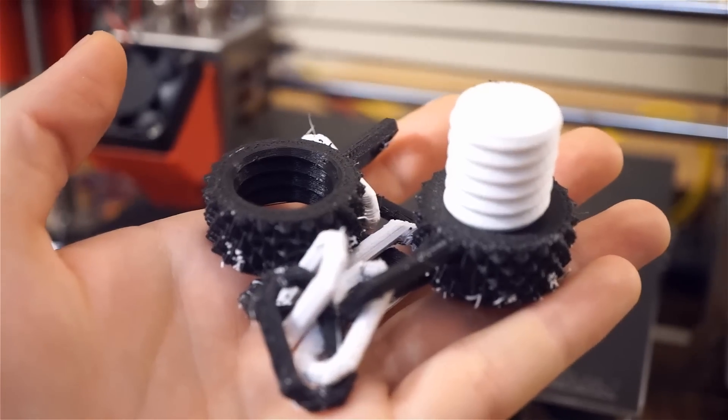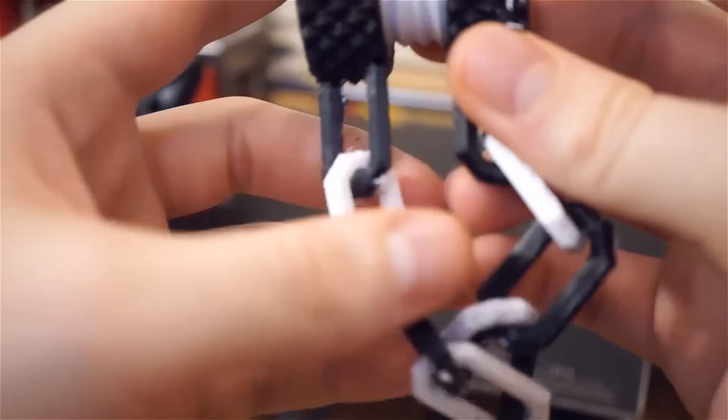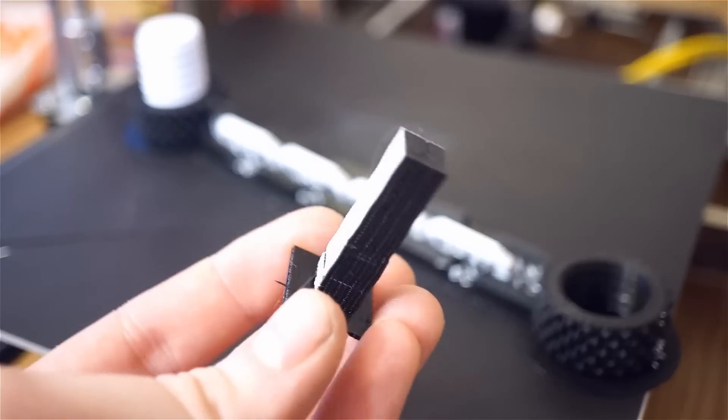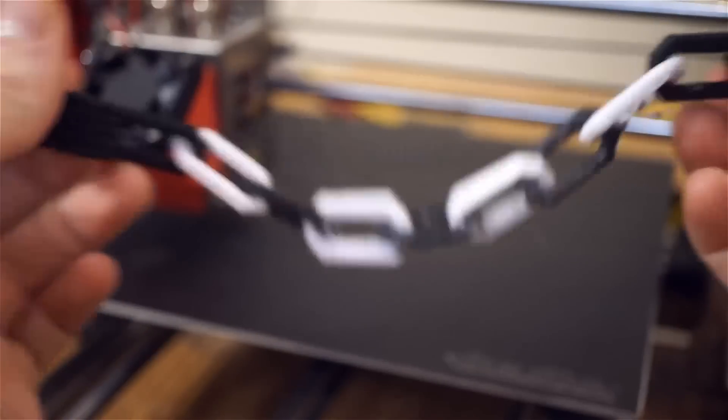Next I printed a chain with alternating colors. I turned on the wipe and prime tower setting in Cura so every time it switched between colors, it would wipe off the excess filament and print the next color on the tower before printing the chain. The printed raft and supports also peeled off nicely. It turned out strong and besides a few tags of filament I thought it did a good job.